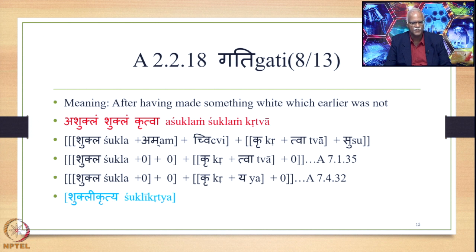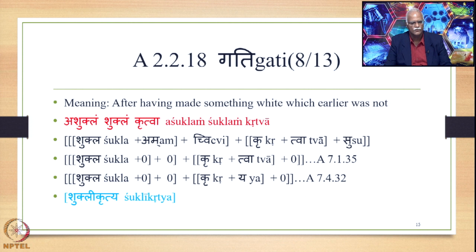The Chvi Pratyaya is also deleted by Verapruktasya. So we have Shukla plus zero plus zero plus Kru plus Tva plus zero. Then Samasa Yane Purvekth substitutes Tva with Yu, and the augment is added. Finally, Asya Chvau applies — 7.4.32 — which substitutes a in Shukla by e. So we get the form Shukli Kritya. Shukli Kritya means 'after having made something white which earlier was not' — Ashuklam Shuklam Kritva.